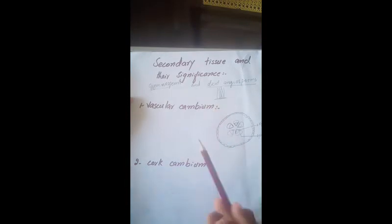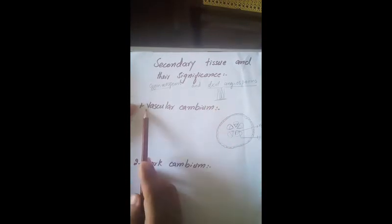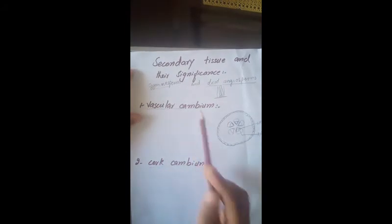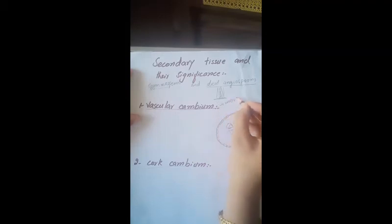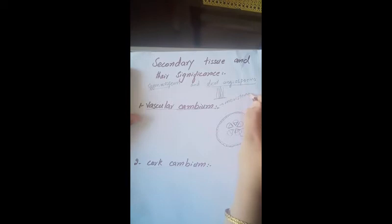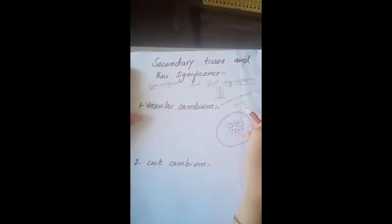There are two types of secondary tissue: vascular cambium and cork cambium. Cambium is the secondary tissue whose cells are meristematic in nature. Meristematic cells are living cells which have the ability to divide.